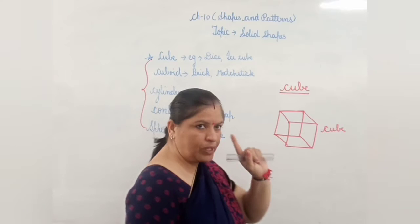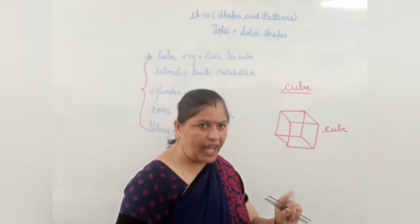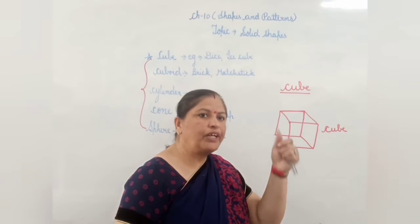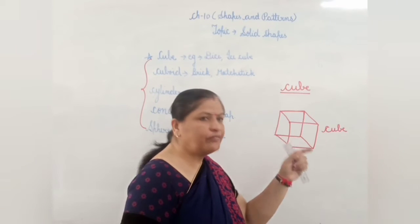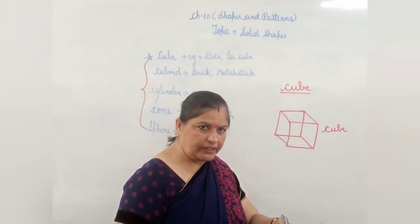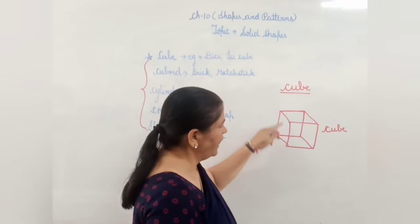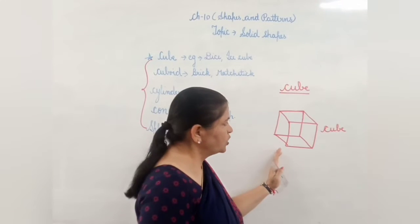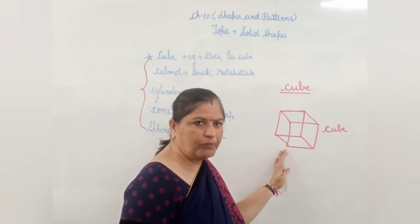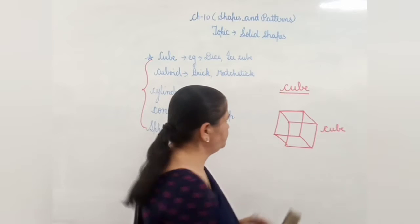So first we will make one square, then we will take one midpoint, and again we will make another square. And then we will join all the meeting points. So it will become a cube.